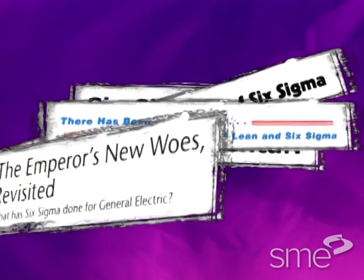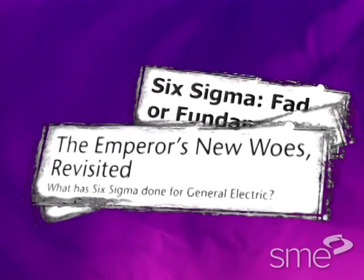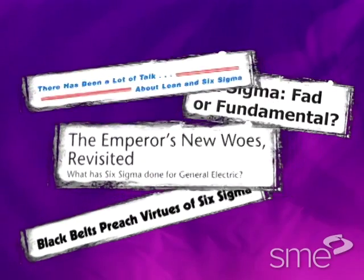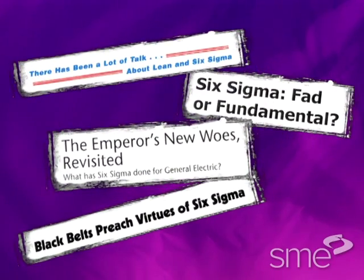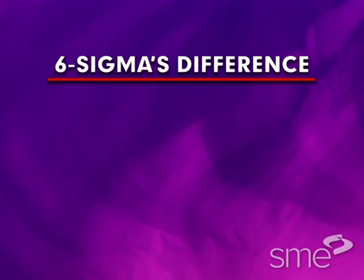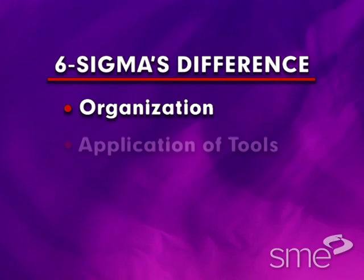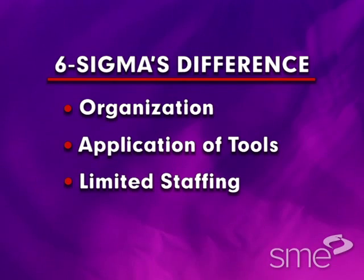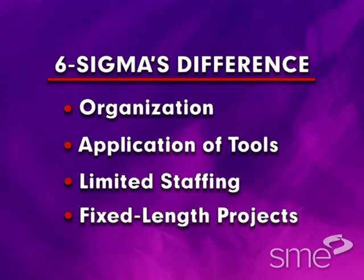Six Sigma has been simultaneously called a revolution and nothing new. Indeed, many of the tools in the Six Sigma methodology are the same tools used in a number of other quality initiatives. The difference appears to be in the organization and application of those tools, the limited staffing requirement for its utilization, and its emphasis on specific fixed-length projects.